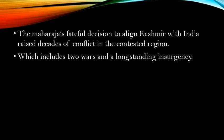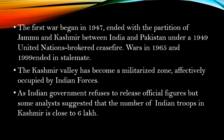Maharaja Hari Singh's fateful decision to align Kashmir with India raised decades of conflict in this contested region, which includes two wars between Pakistan and India — 1965 and 1971. The first war began in 1947 and ended with a partition of Jammu and Kashmir between India and Pakistan, in which India controls 55% and Pakistan controls approximately 35% of the land area. It ended under a 1949 United Nations-brokered ceasefire. The wars of 1965 and 1999 ended in stalemate.